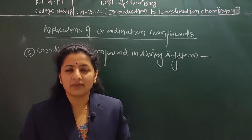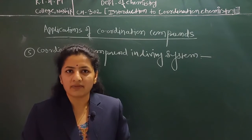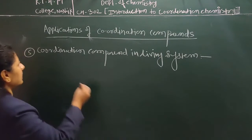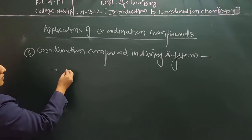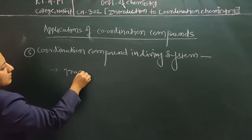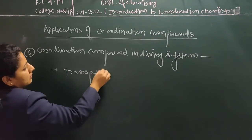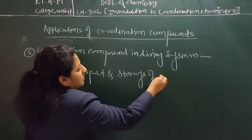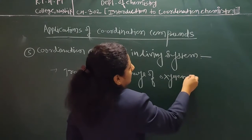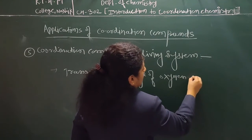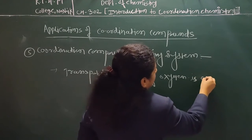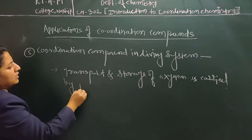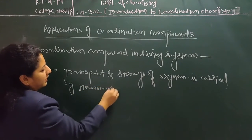Chlorophyll is also a coordination compound that plays a very important and vital function in photosynthesis. In living systems, coordination compounds play a very important role in the transport and storage of oxygen, which is carried by hemoglobin and myoglobin.